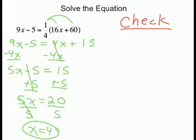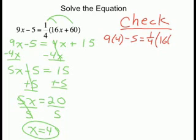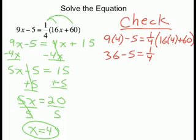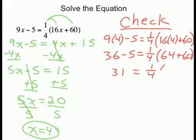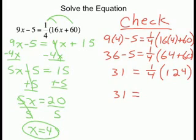We check our solution by substituting 4 back into the original equation. We have 9 times 4 minus 5 equals 1/4 times the quantity 16 times 4 plus 60. 9 times 4 is 36, and 16 times 4 is 64. 36 minus 5 is 31, and 64 plus 60 is 124. 1/4 times 124 equals 31. 31 equals 31, so 4 is a solution.